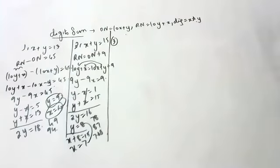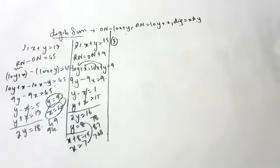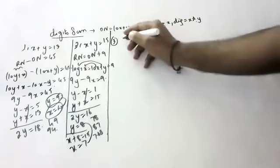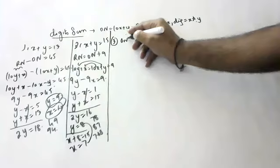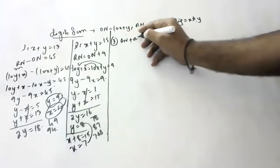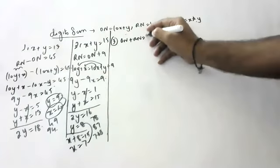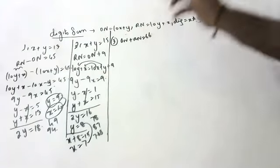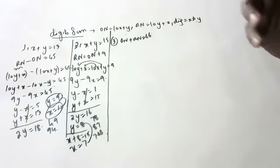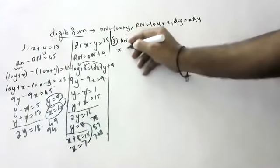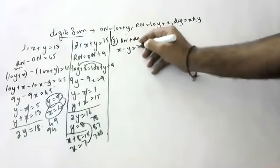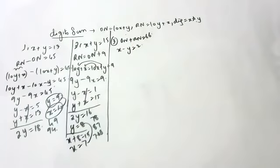One more question. Sum of the number and reversive number is 65. If 2 digits differ by 2, find the number.